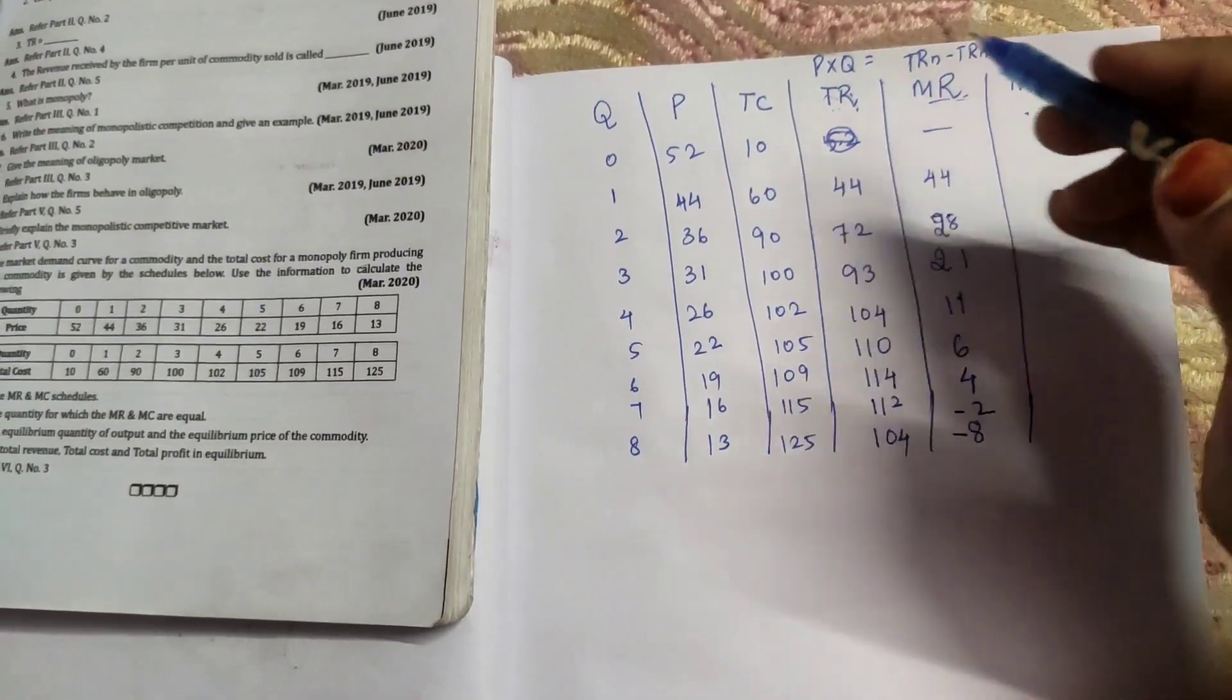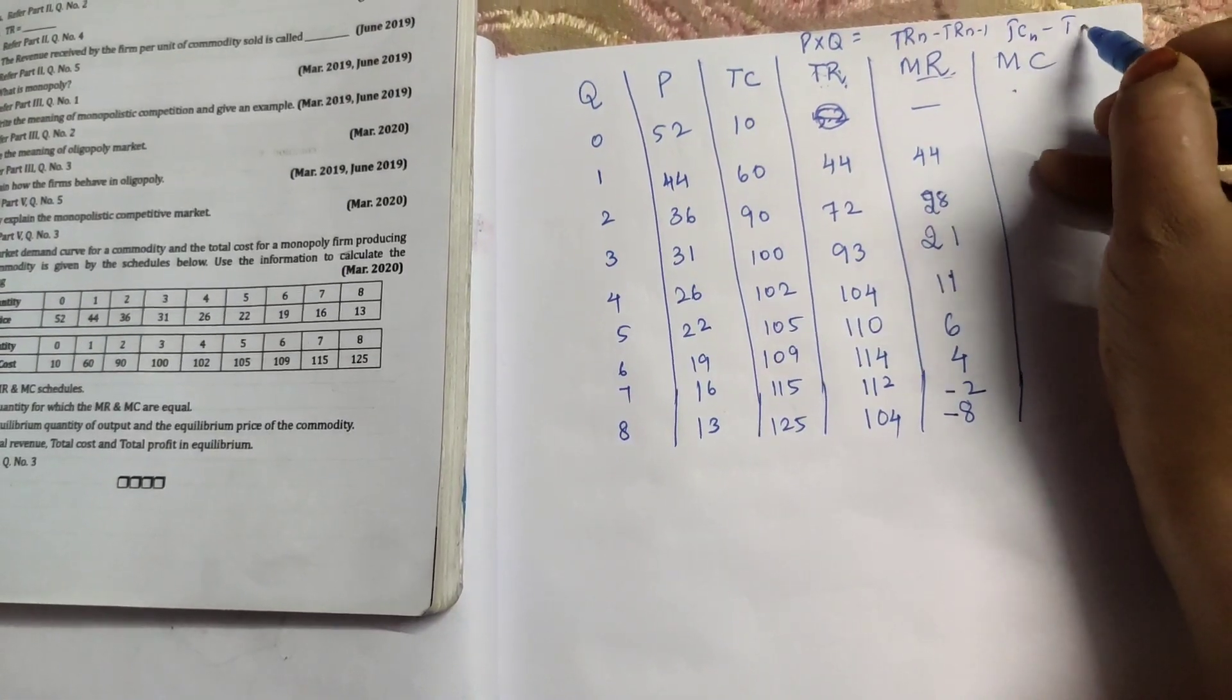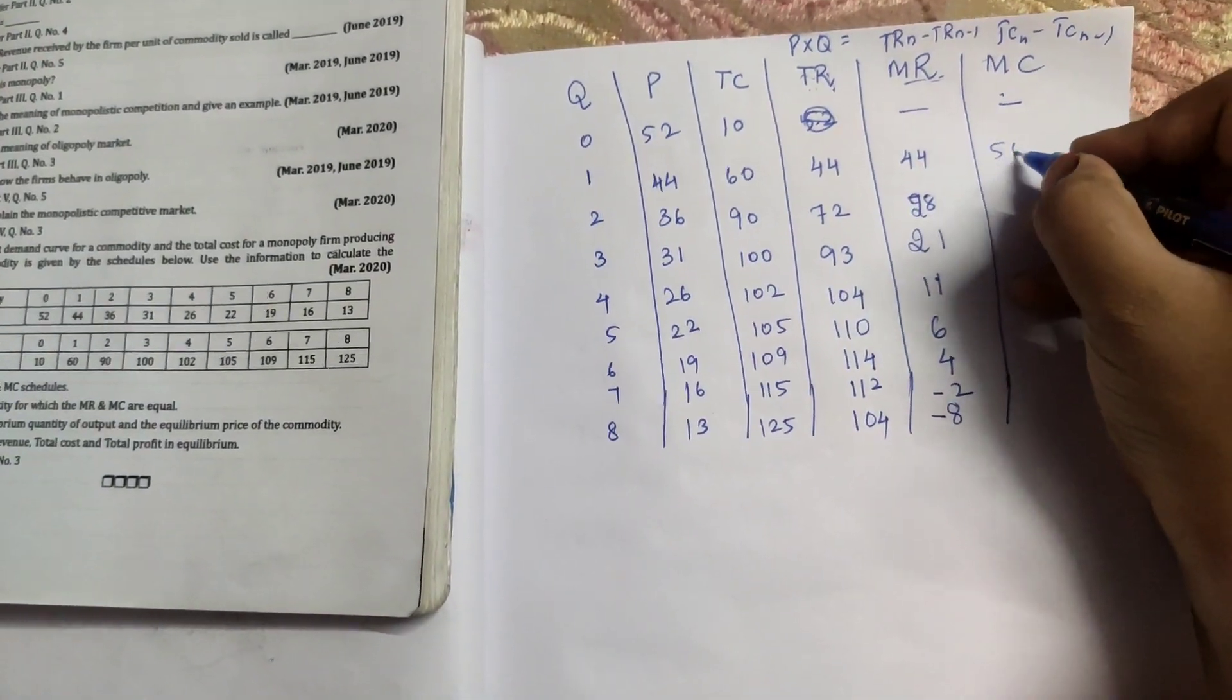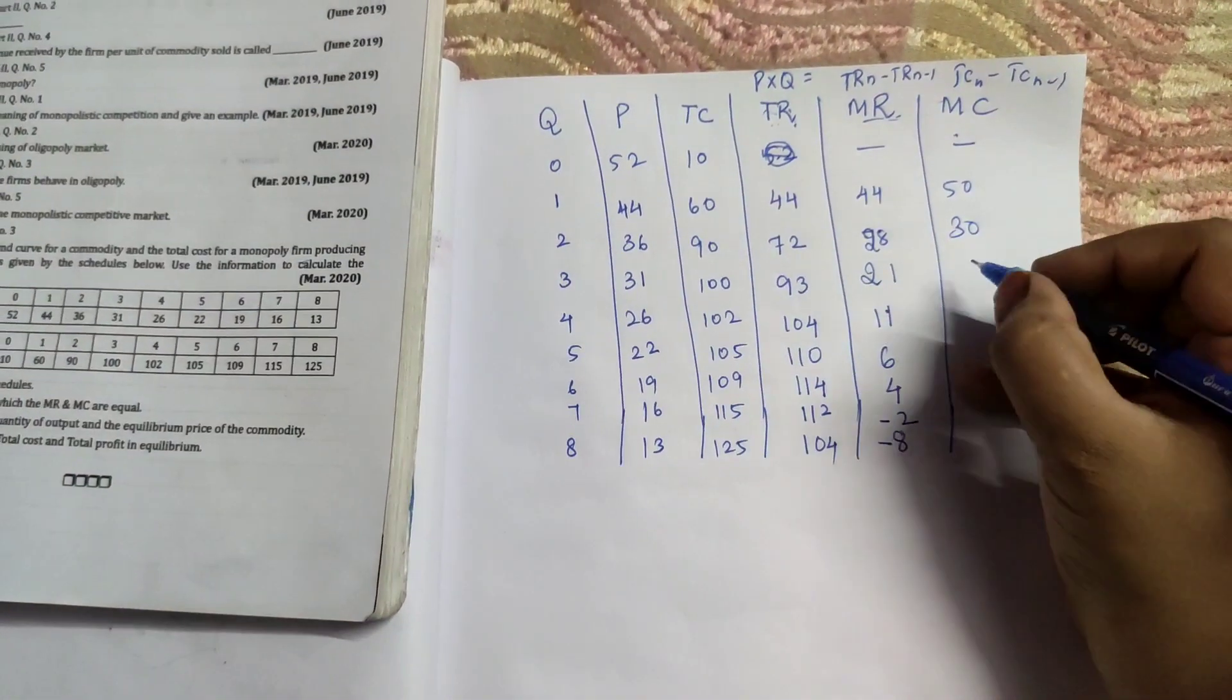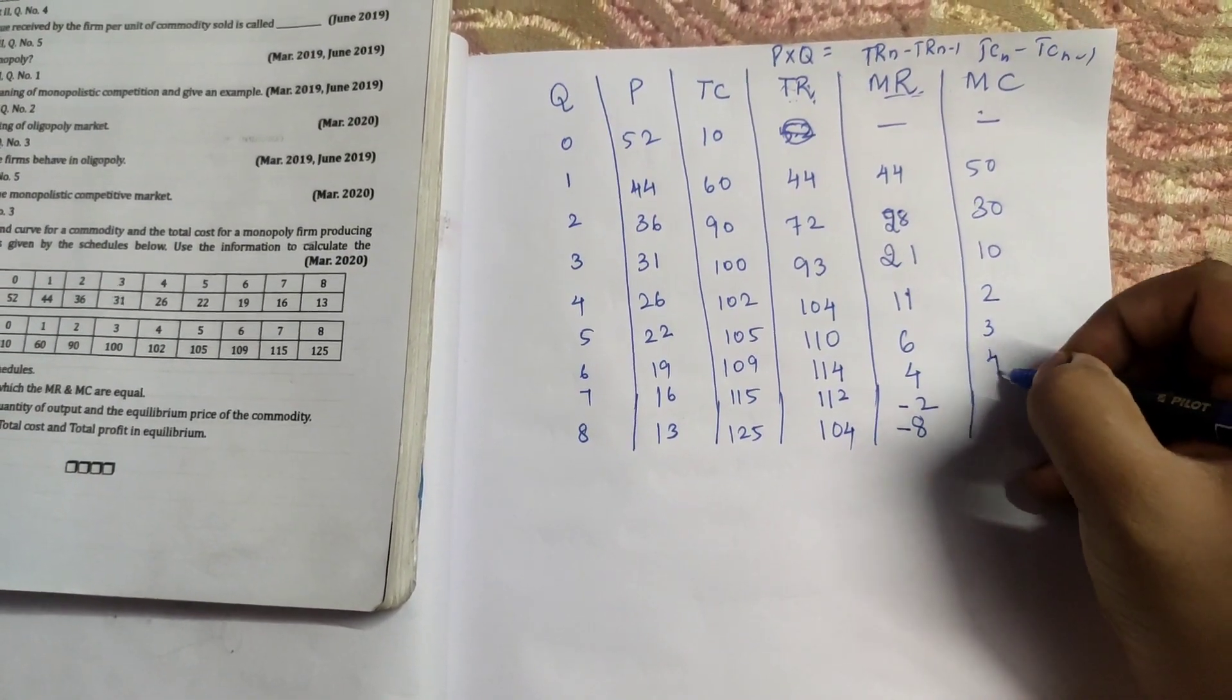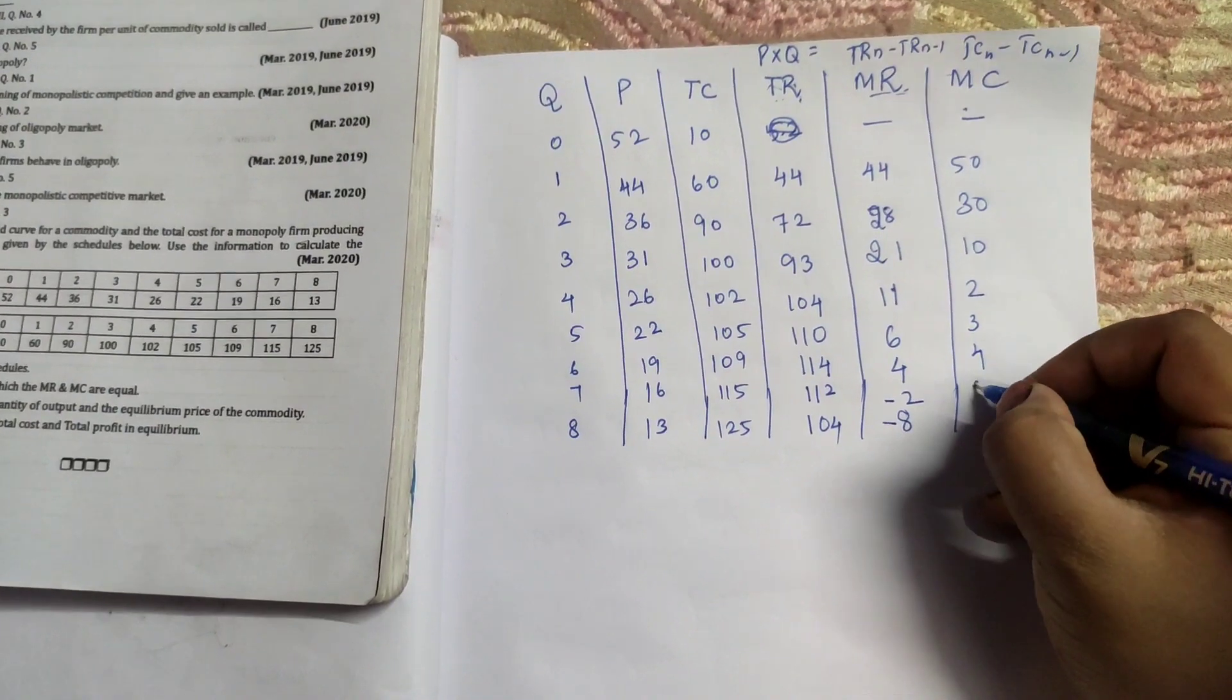Now we will calculate MC. So total cost N minus total cost N minus 1. Upper we do not have any value. 60 minus 10 is 50. 90 minus 60 is 30. 100 minus 90 is 10. 102 minus 100 is 2. 103 minus 102 is 1. 107 minus 103 is 4. 118 minus 107 is 11. 125 minus 118 is 7. 135 minus 125 is 10.